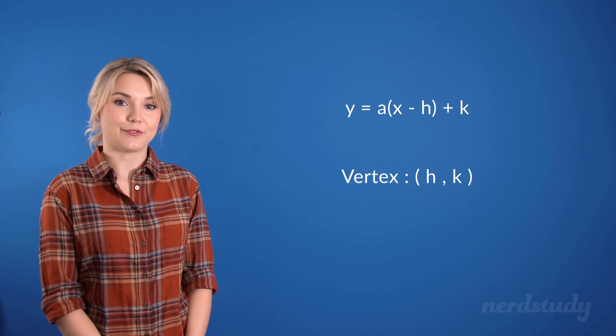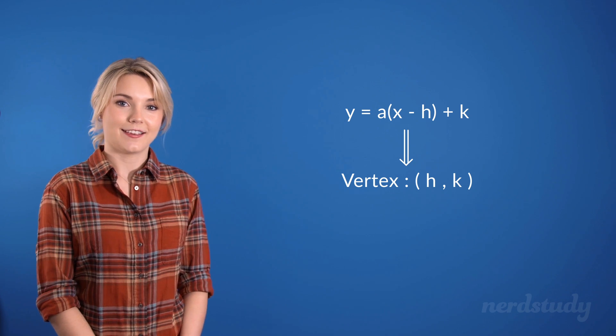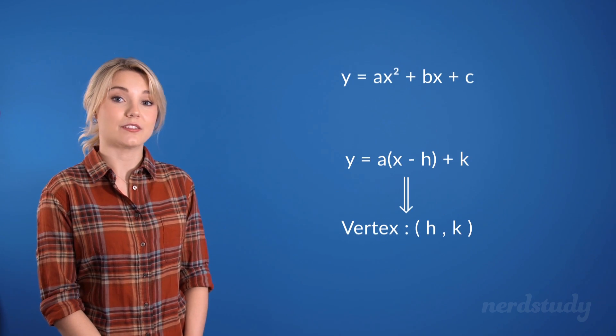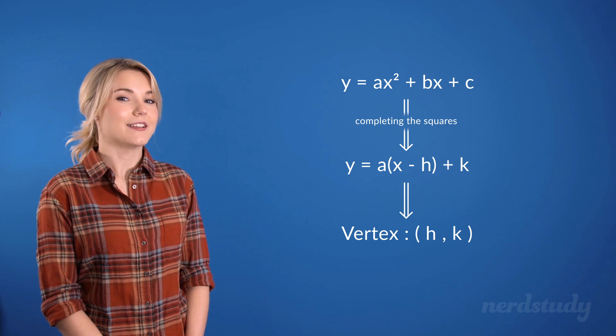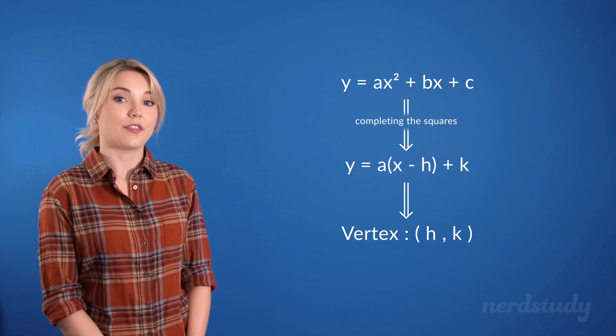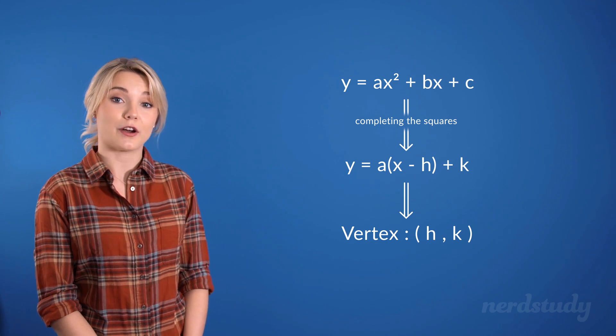So by now, we know how to find the vertex when given the vertex form of a quadratic equation, and also know how to complete the square from the standard form to get to the vertex form. However, there is another rather simple way to get the vertex, which is from the use of partial factoring.